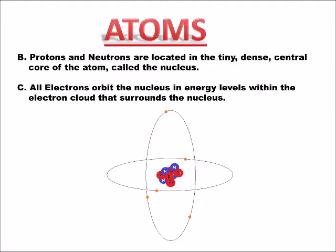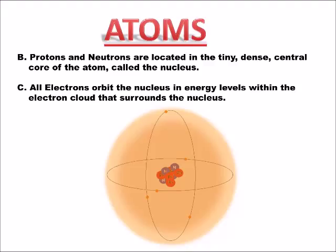The electrons orbit the nucleus in energy levels within an electron cloud that surrounds the nucleus. Notice that there's one electron for every proton in the nucleus. Those electrons are moving so fast that if you could actually see the atom, they would appear as a blur — creating what's called an electron cloud. The atom has a tiny dense nucleus containing protons with positive charge and neutrons with no charge, orbited by electrons with almost no mass but a negative charge of one.